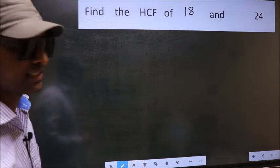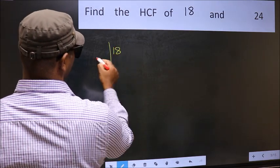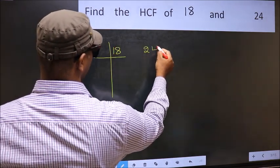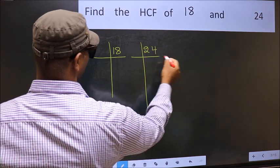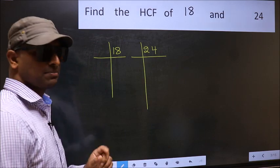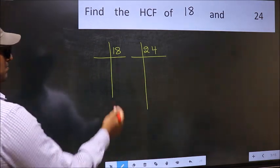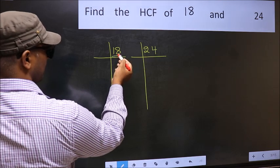What I mean is 18 and 24. This is your step 1. Next, in this number, here we have 18.